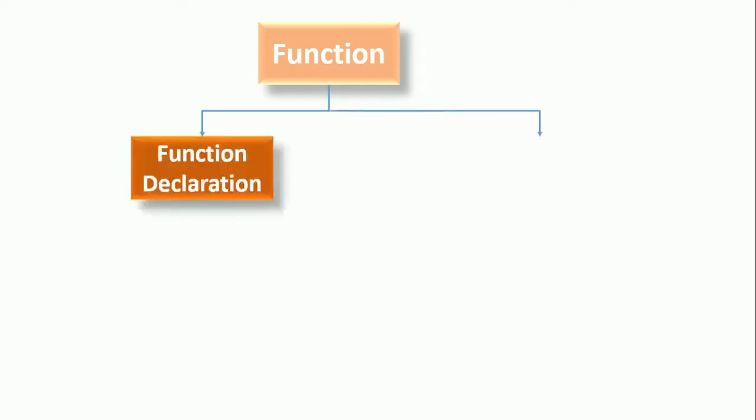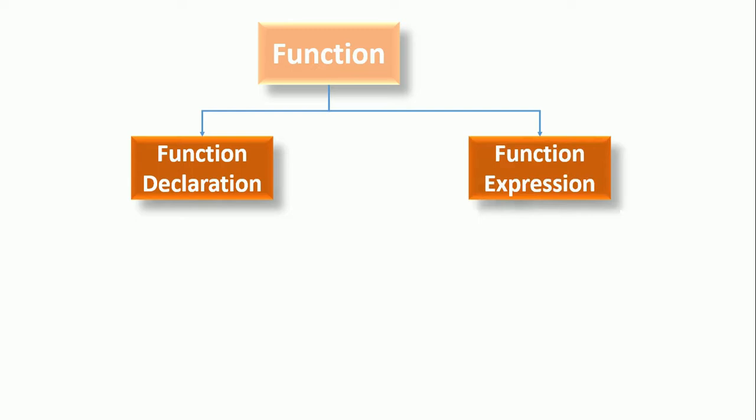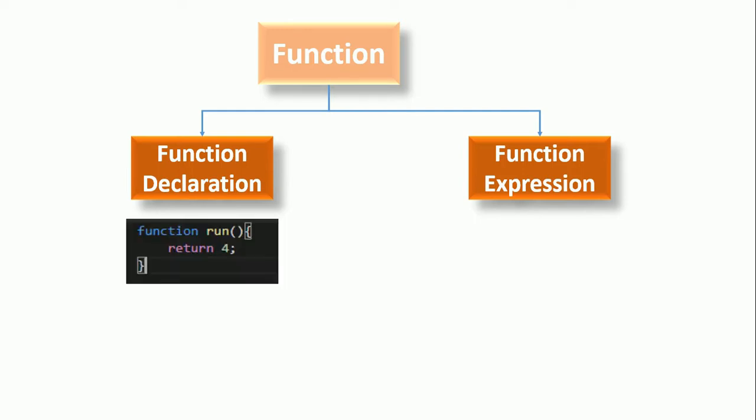In JavaScript, functions are divided into two subtypes: function declaration and function expression. Function declaration defines a named function variable without requiring variable assignment. For example, this function 'run' is declared without any variable assignment, so this type is called function declaration.